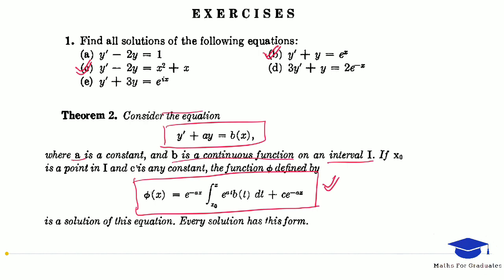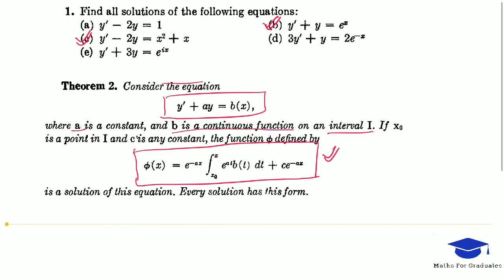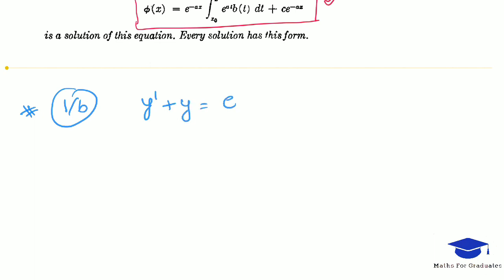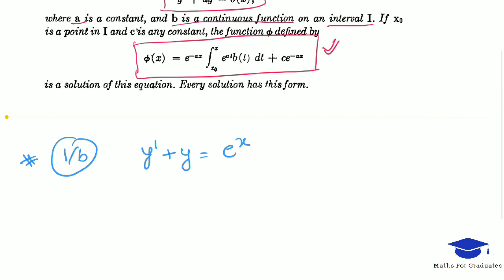So we have problem 1B: the differential equation is y' + y = e^x. From the theorem, the solution will be φ(x) = e^(−ax), and since a = 1 here, it becomes e^(−x), multiplied by the integral from x₀ to x.